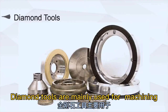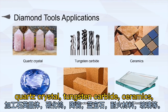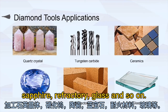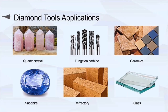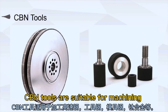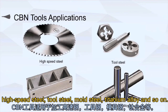Diamond tools are mainly used for machining quartz crystal, tungsten carbide, ceramics, sapphire, refractory, glass, and so on. CBN tools are suitable for machining high-speed steel, tool steel, mold steel, titanium alloy, and so on.